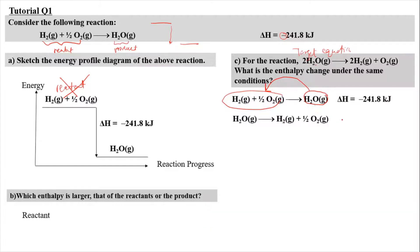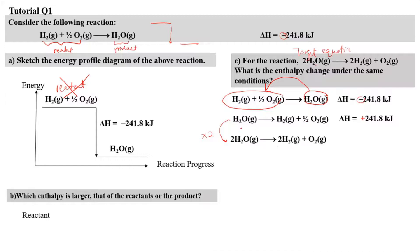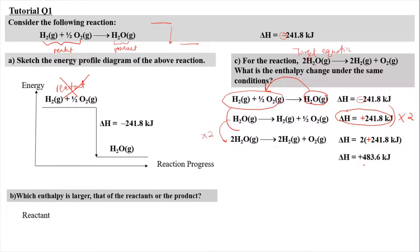Once we reverse the equation, the enthalpy change also has to change in sign — from negative to positive — but the magnitude stays the same. Now we need to multiply by 2 because we need 2 moles of water; the given equation only has 1 mole. So 1 mole of hydrogen becomes 2 moles, and half mole of oxygen multiplied by 2 gives 1 mole of oxygen, matching our target equation. Once we multiply the equation by 2, we also multiply the enthalpy change by 2. So ΔH = 2 × (+241.8) = +483.6 kJ.